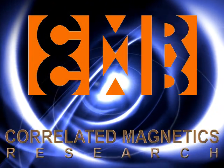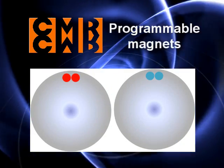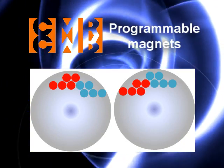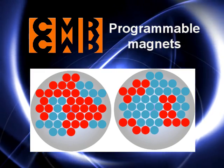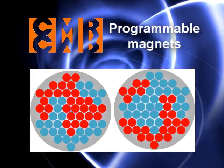Correlated Magnetics Research presents Programmable Magnets. Correlated magnetic structures are programmed by imparting onto the substrate coded patterns of magnetic field sources that determine their field and force properties.